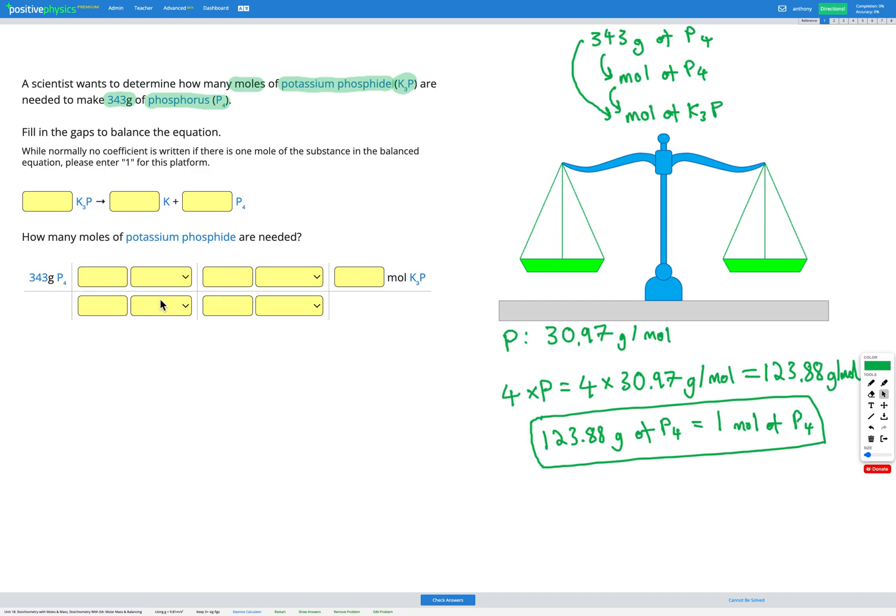So grams of P4 is going on the bottom so that it will cancel out and we'll end up with moles of P4. So I'm going to put that on the top. Then I need my numbers in here so that the top and bottom of my fraction are equal. So I know that one mole of P4 is equal to 123.88 grams of P4.